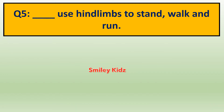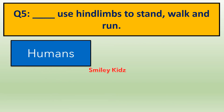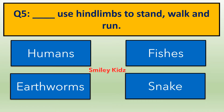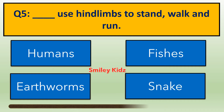Question number 5. Dash uses hind limbs to stand, walk and run. Options are: A. Humans, B. Fishes, C. Earthworms, D. Snakes. Your time starts now. Your time is up. The right answer is Humans. Humans use hind limbs to stand, walk and run.